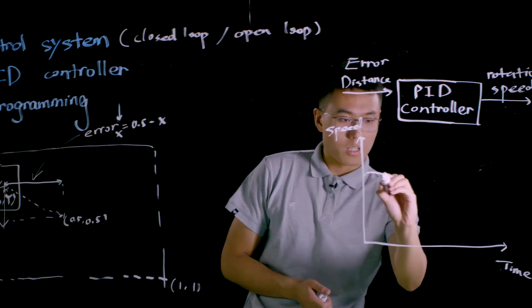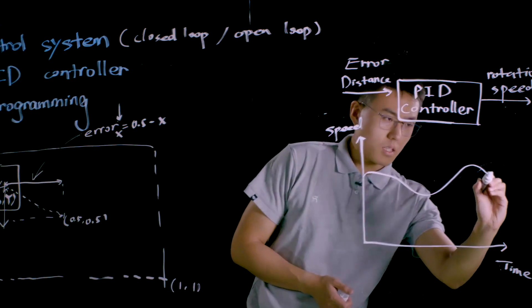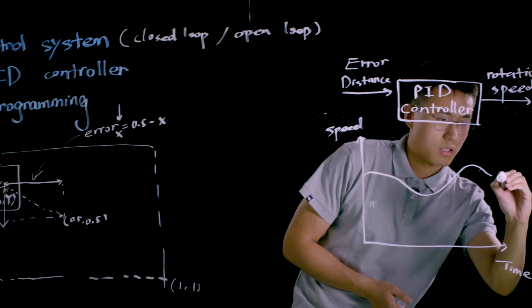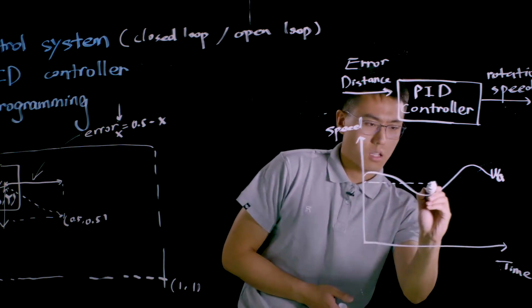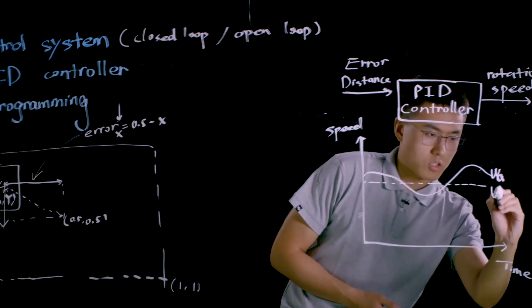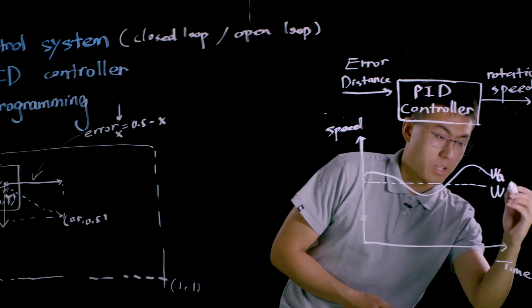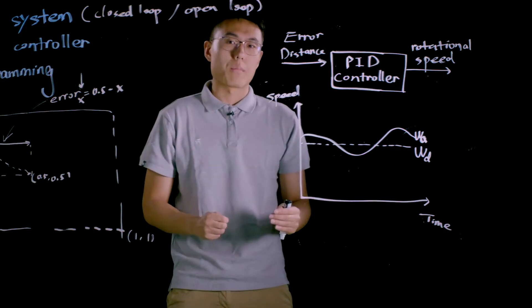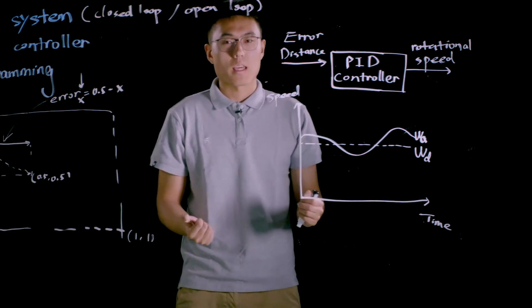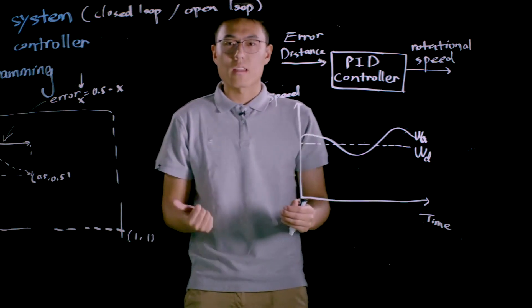I'll use a solid line to represent the actual speed omega A, and I'll use dash line to represent the target speed or desired speed omega D. PID controller can calculate three different outputs: P out, I out, and D out. Let's take a look at the P out first.